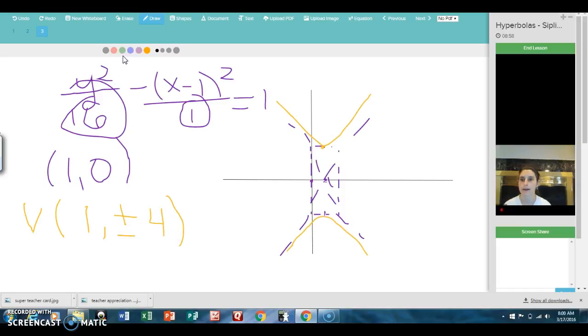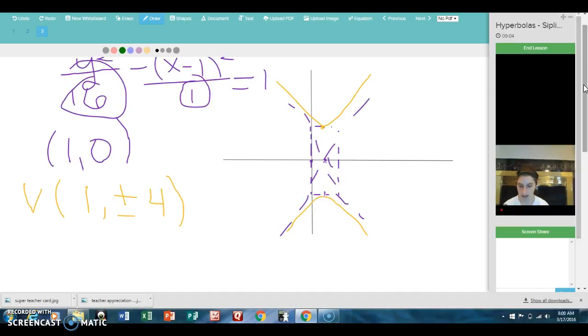For the asymptotes, the equation is going to be that point-slope form of a line. Y equals m is the y radius over the x radius. So, four over one. Here's the x point on the center. And then I'm going to put plus or minus because there's two of them.